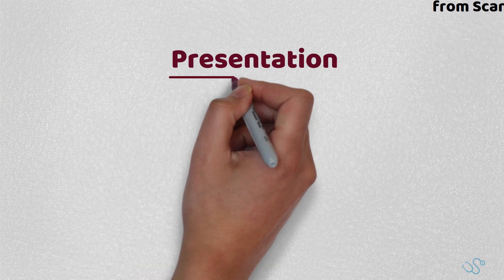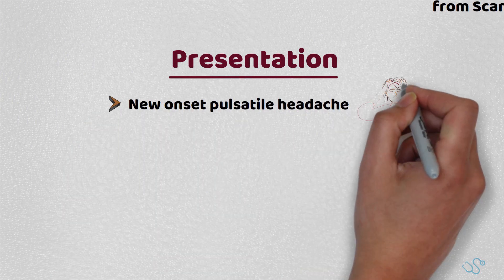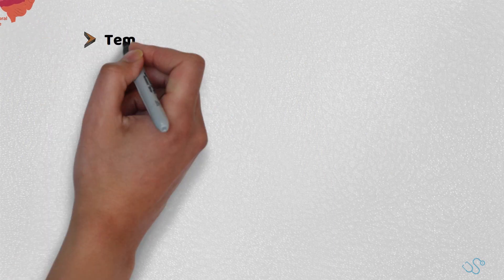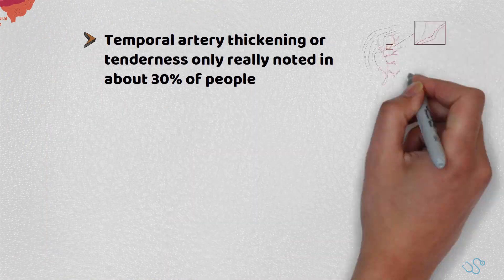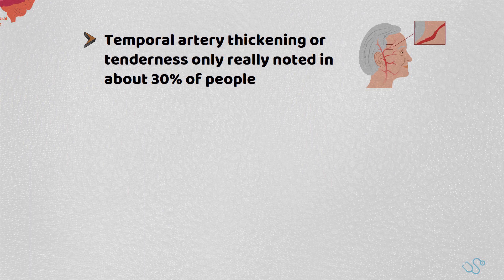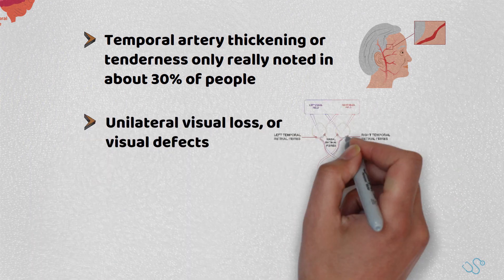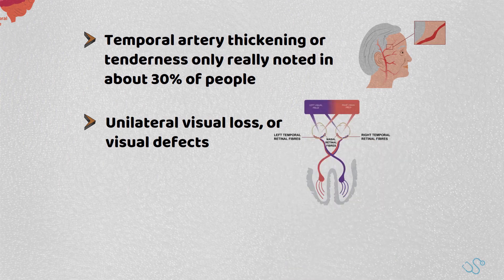Typically, patients present with a new-onset pulsatile headache, usually over the temporal location, but this can vary, with temporal artery thickness or tenderness only really noted in about 30% of people. People often go on to develop unilateral visual loss or visual defects, such as double vision or color vision impairment.